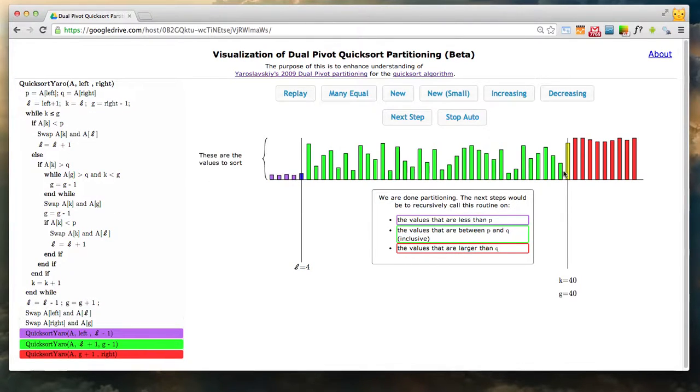The algorithm works by doing this and then calling itself recursively on the three different regions. There's other factors like dealing with equal pivots, but I'm not going to get into that here. This is just to look at it in a best case way.